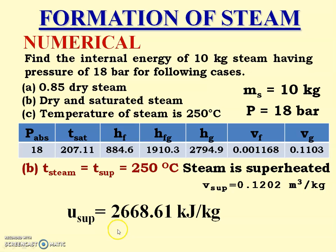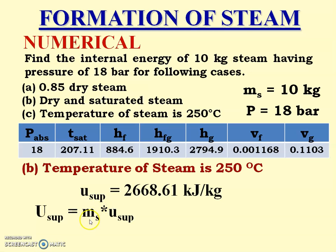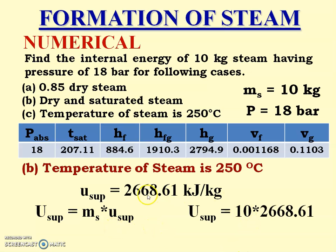Calculating, the specific internal energy of superheated steam = 2668.61 kJ/kg. Total internal energy U_sup = 10 × 2668.61 = 26686.1 kJ.